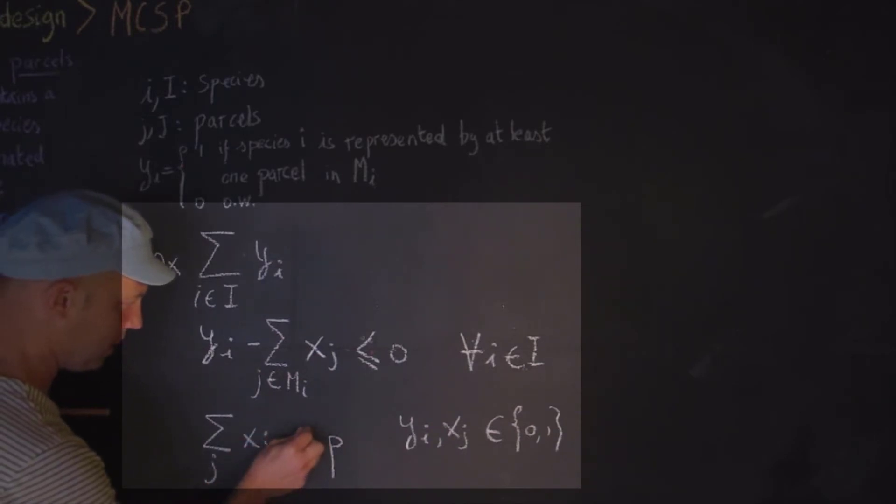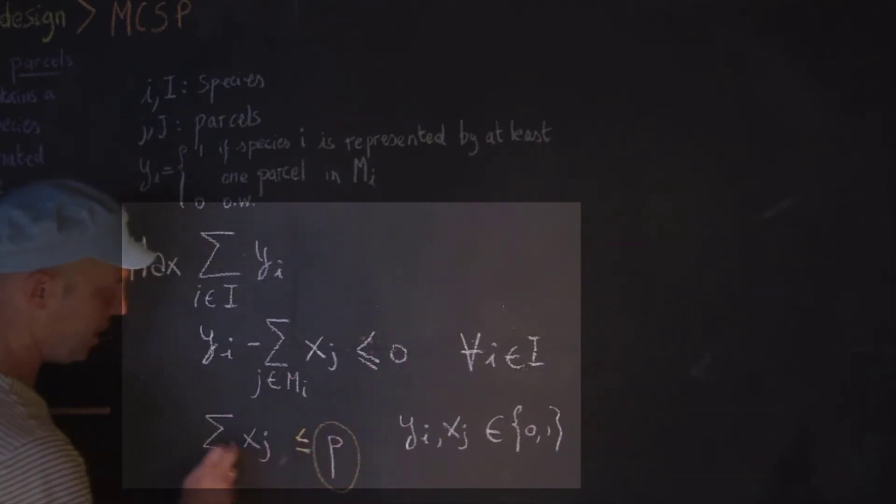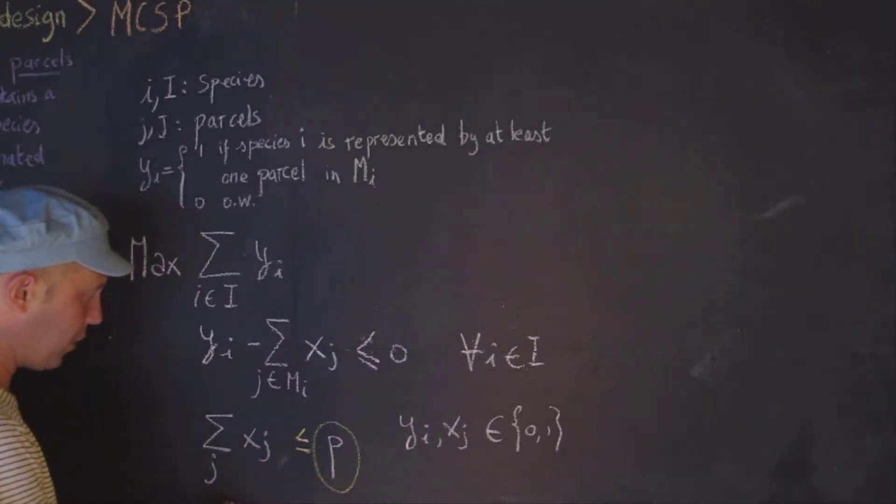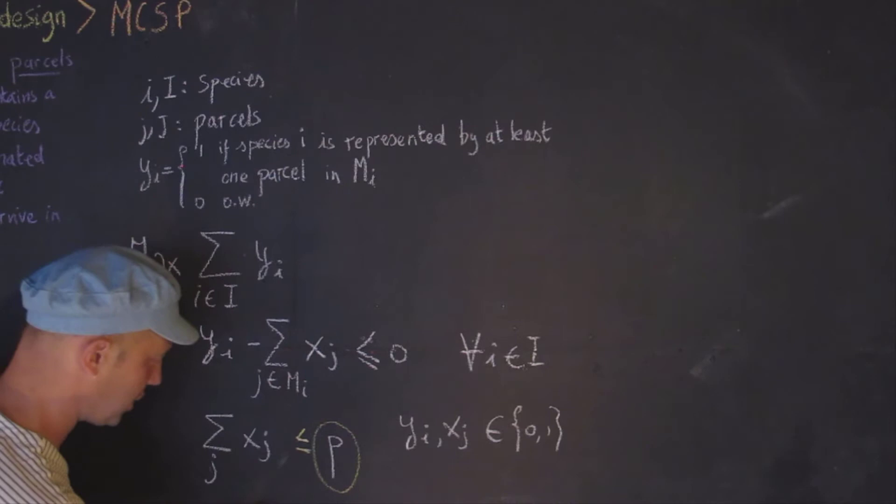So first off, this could be less or equal to P, so that depends what you want. But then another thing is, what is P? Because here P would be, okay, we can set aside four parcels. But sometimes we have issues with how big these parcels are. Maybe they are more expensive. So this could easily be changed.